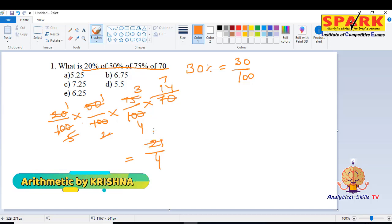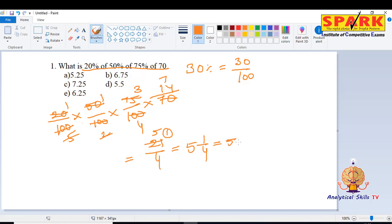4 into 5 times cancel, 1 is the remainder, that means 5 and 1 by 4 or 5.25. So, first option is the answer.